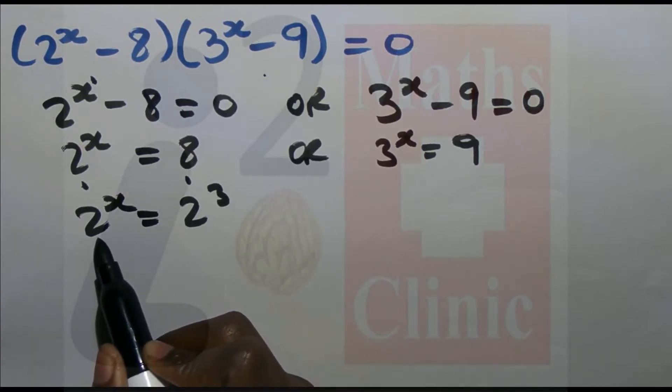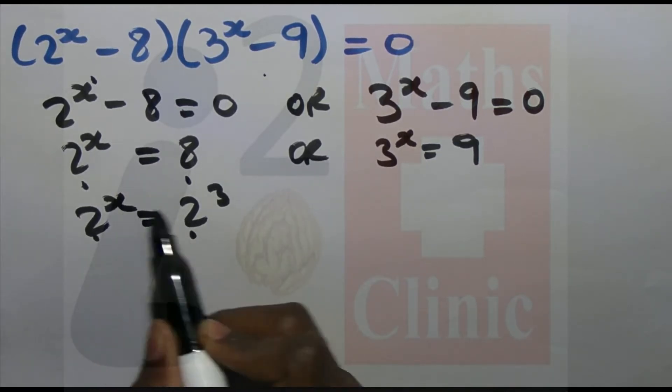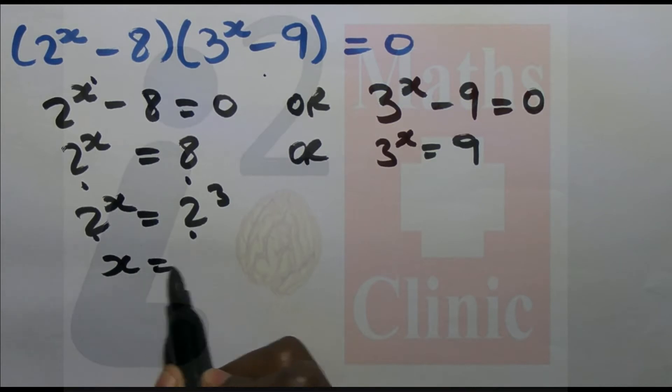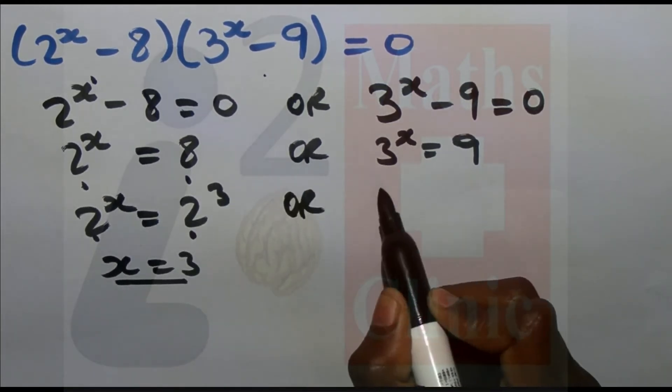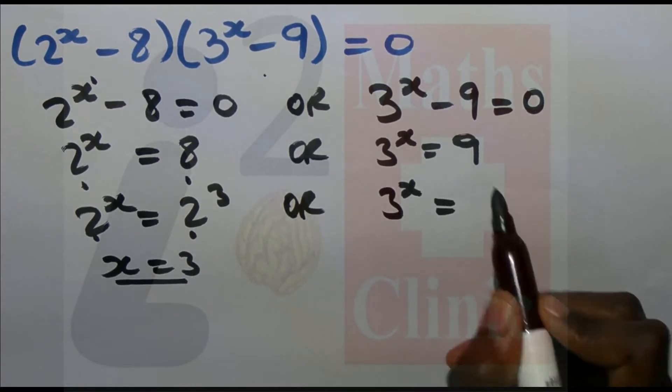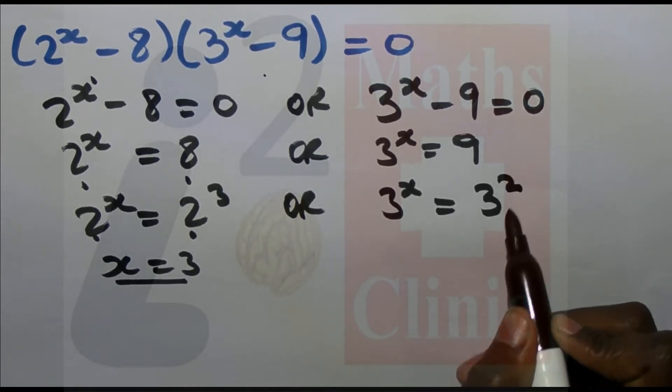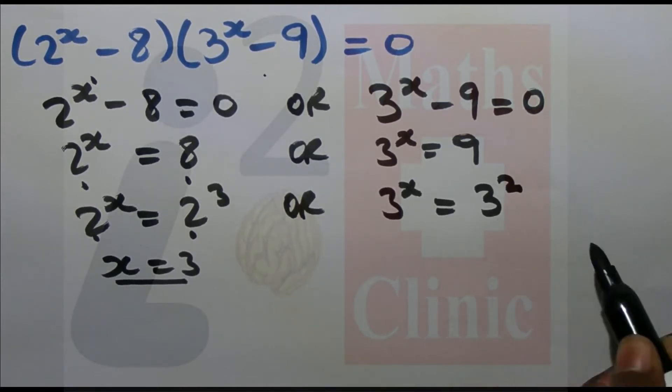Now we equate the exponents. We need the same bases. So 3^x = 9, which equals 3^2, since 3 times 3 equals 9.